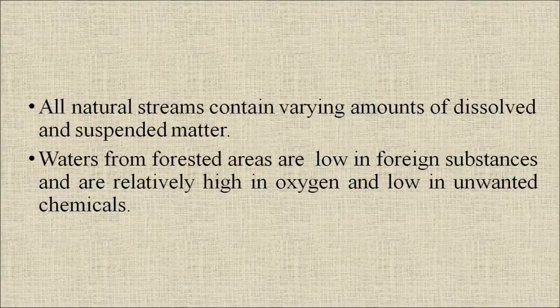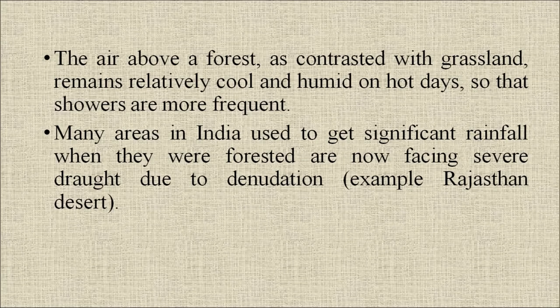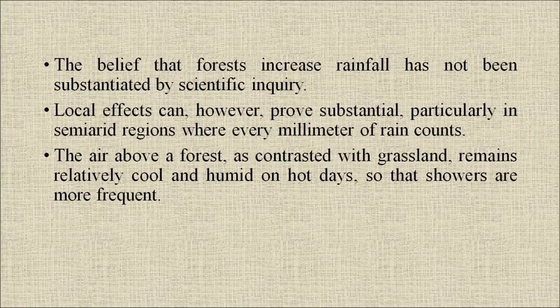All natural streams contain varying amounts of dissolved and suspended matter. Water from forested areas is low in foreign substances and relatively high in oxygen and low in unwanted chemicals. The air above a forest remains relatively cool and humid on hot days so that showers are more frequent. Many areas in India used to get significant rainfall when they were forested and are now facing severe drought due to denudation — for example, the deserts of Rajasthan. The belief that forests increase rainfall has not been fully substantiated by scientific inquiry, but local effects can prove substantial, particularly in semi-arid regions.